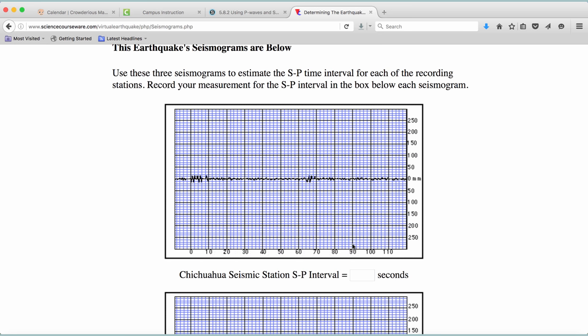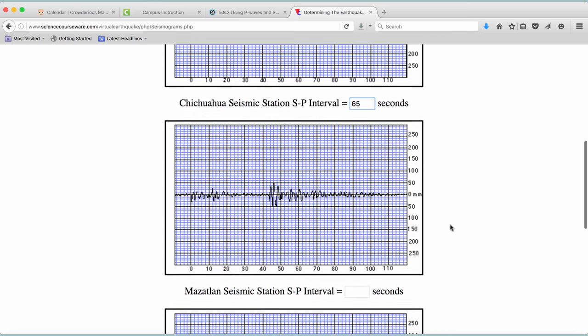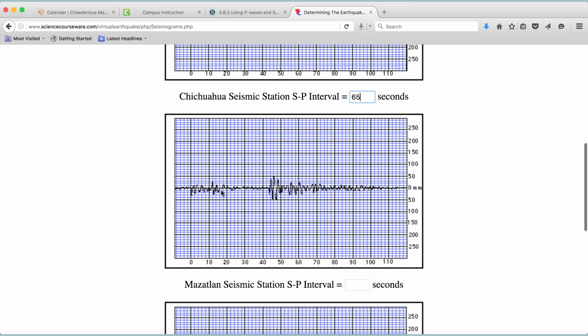You will type in the S minus P interval box, how much time you see between the two jiggles. I call this the time lag. I read this one as zero to 65 seconds, so I type that in. And you do this for the two other seismograms.